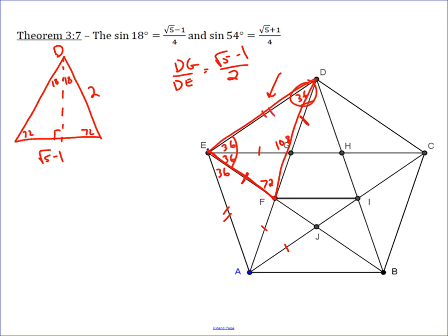Then, if I want to find something about 18, I can do sine of 18 degrees equals opposite. Well, the opposite here is this length, which is half of the base, and so we can call that root 5 minus 1 over 2. And then the hypotenuse of this triangle is 2, so that's going to be over 2.